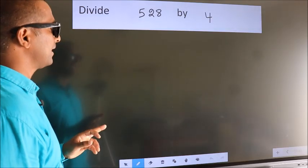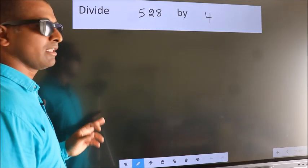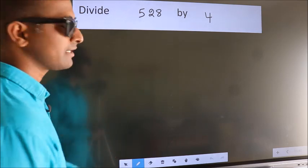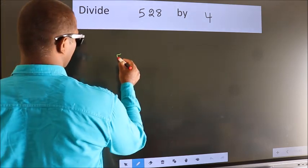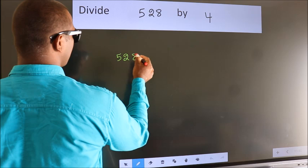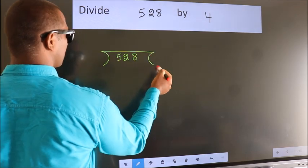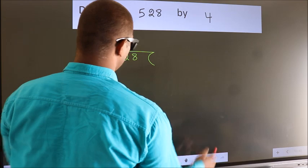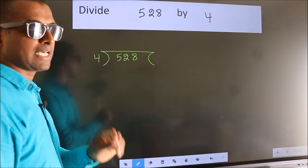Divide 528 by 4. To do this division, we should frame it in this way: 528 here, 4 here. This is your step 1.